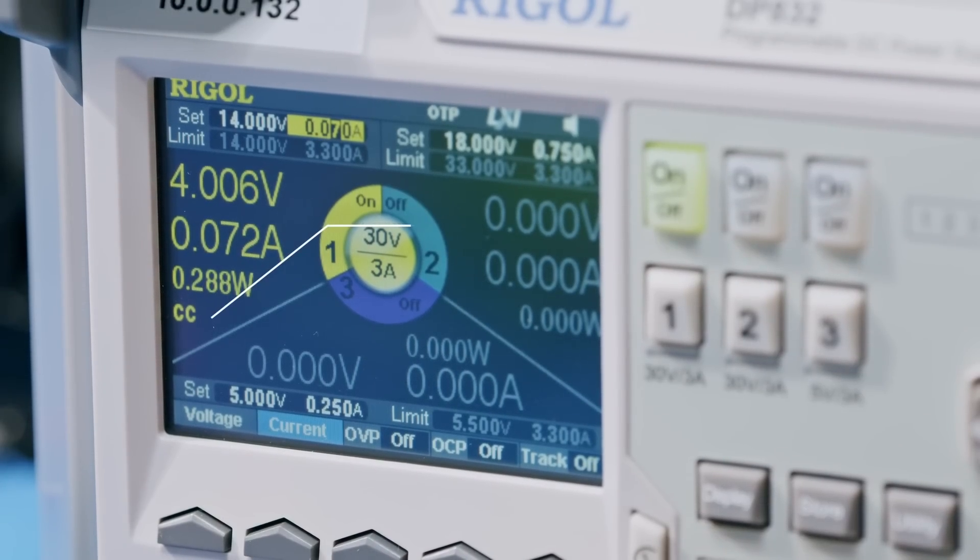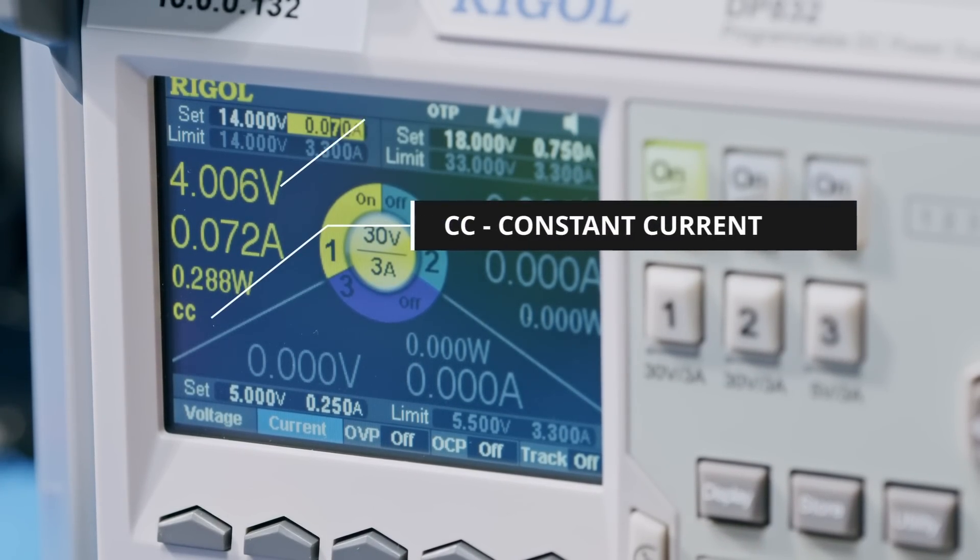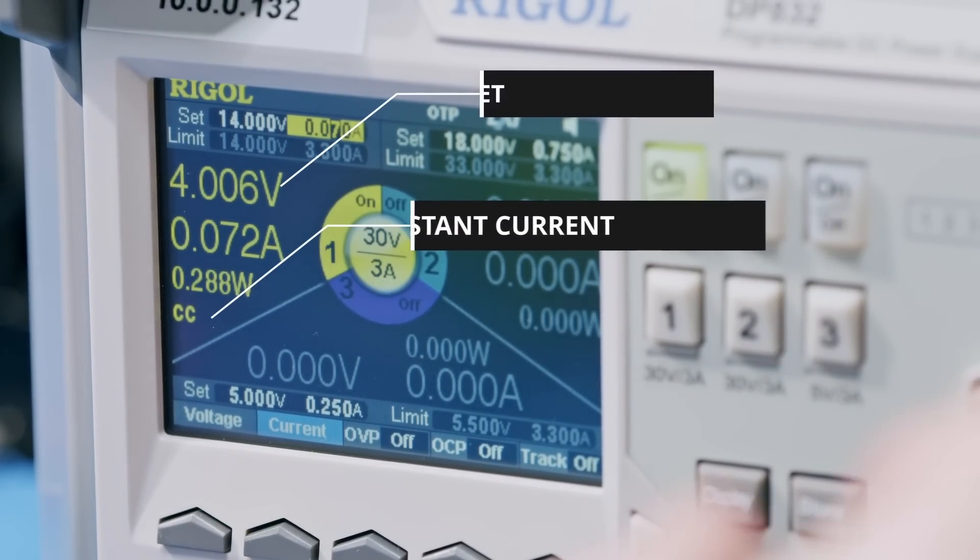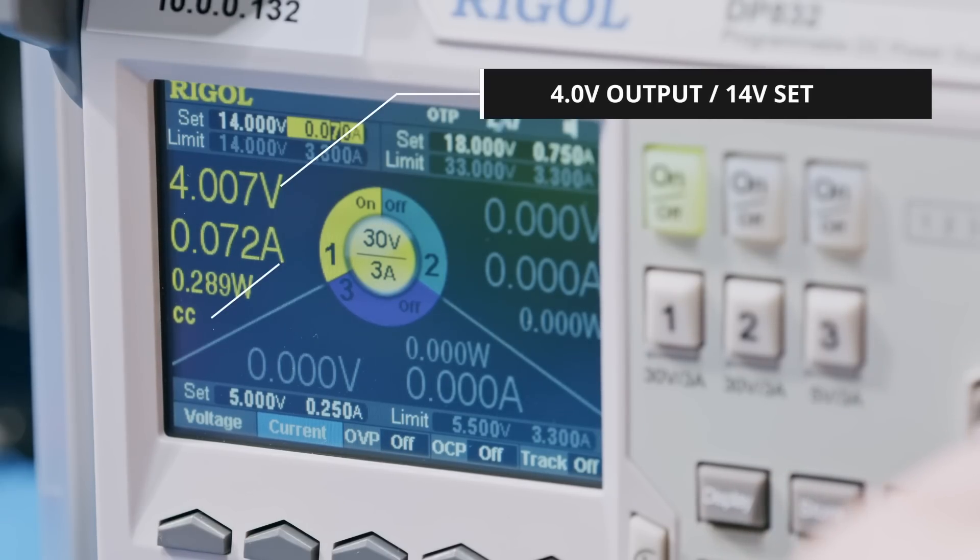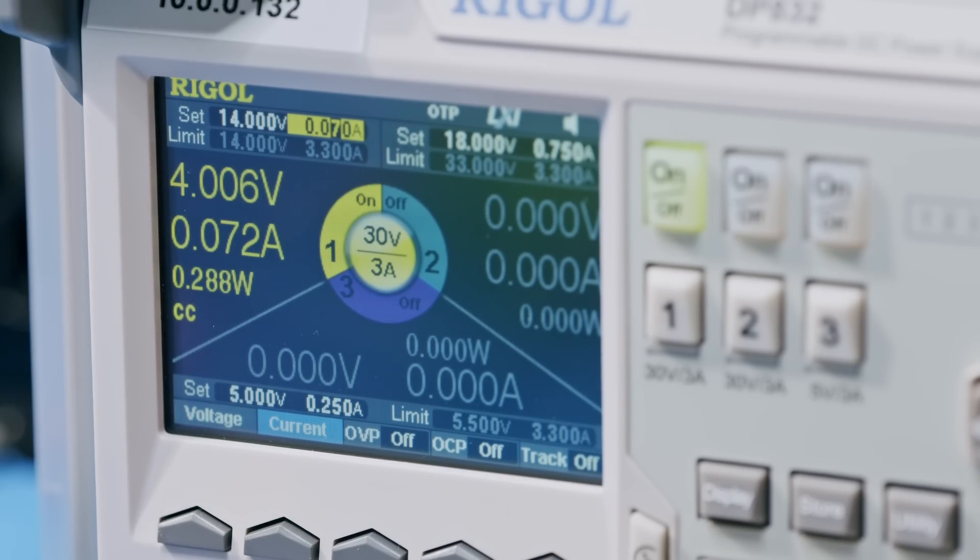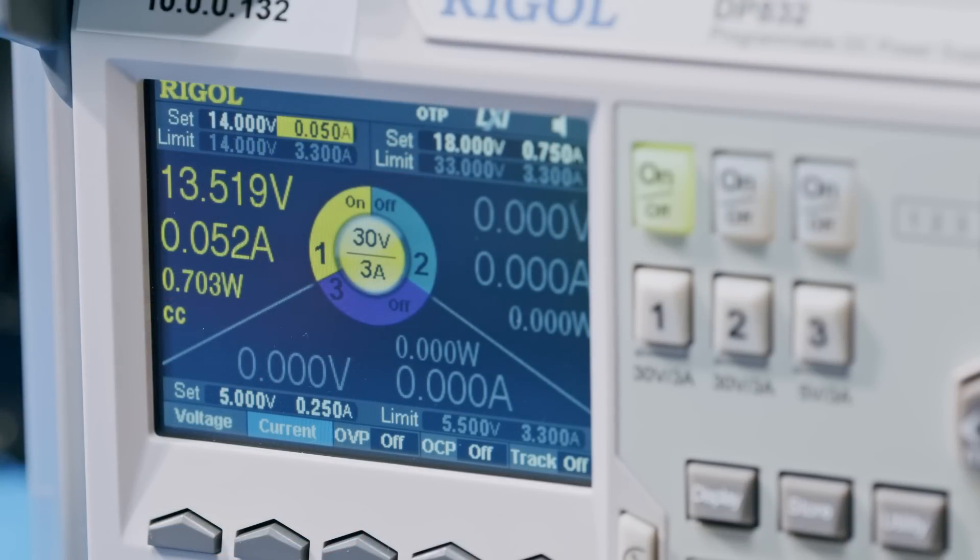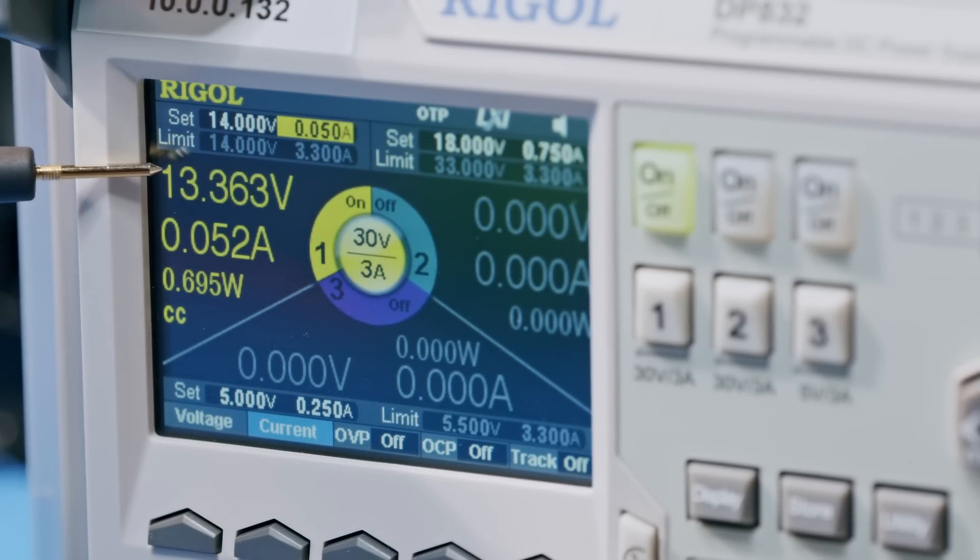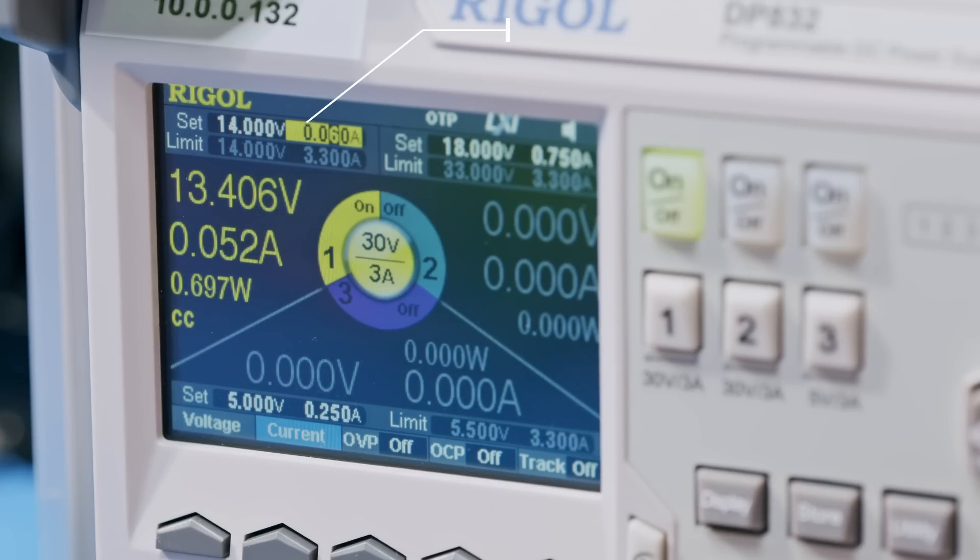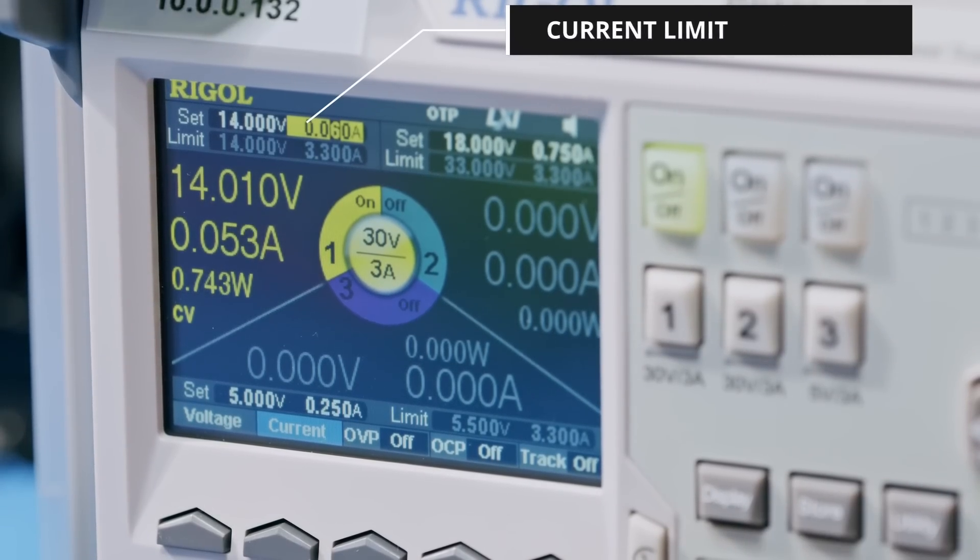Keep an eye on the current limit. If the supply changes to constant current mode, look at the output voltage. If the voltage is relatively low, it could indicate that the board has a short or similar fault. On the other hand, if the voltage is close to the set point, you might have the current limit set a little bit low. By increasing the current limit, you may get the board online safely.